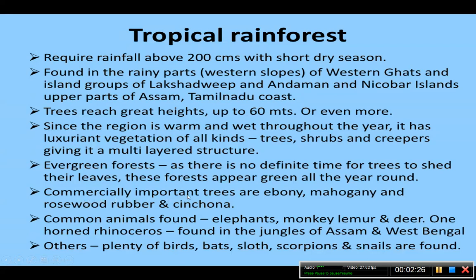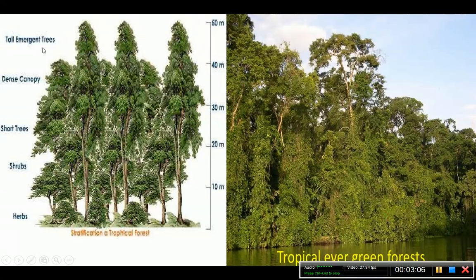Commercially important trees found here are ebony, mahogany, rosewood, rubber, and cinchona. Common animals found in these forests are elephants, monkeys, lemurs, and deer. One-horned rhinoceros is found in the jungles of Assam and West Bengal. There are also plenty of birds, bats, sloths, scorpions, and snails.